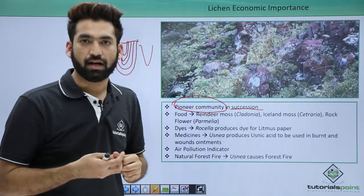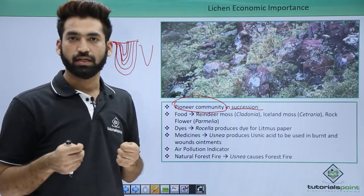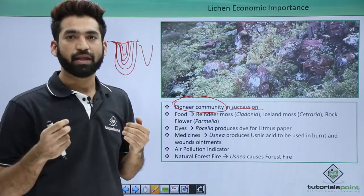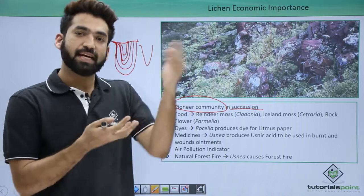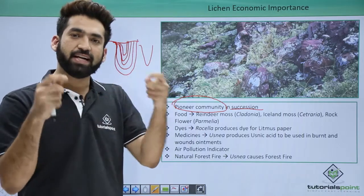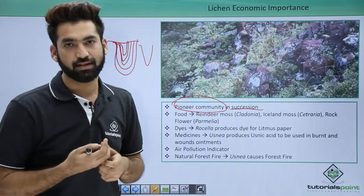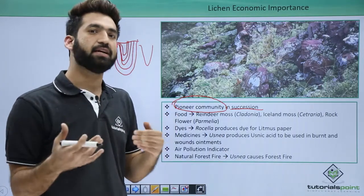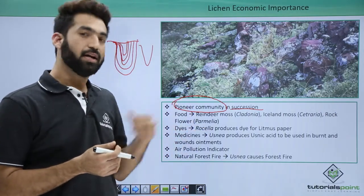When rain and water come, rock weathering begins. After weathering, mosses arrive. Mosses have the capability to retain water, and when they die, more weathering occurs and different plants start coming. This process — one community establishing, then being replaced by the next — is called succession. Lichen starts this process, so they are called the pioneer community.